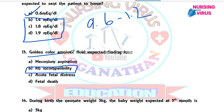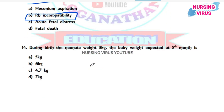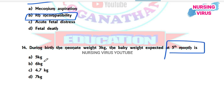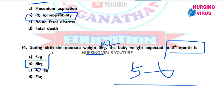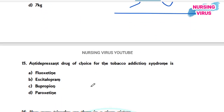Question 14: During birth the baby weight is 3 kg. What is the expected weight at five months? The options are 5 kg, 6 kg, 4.7 kg, and 7 kg. From birth to five to six months, the baby's weight doubles, so 3 kg multiplied by 2 equals 6 kg. The correct answer is 6 kg.